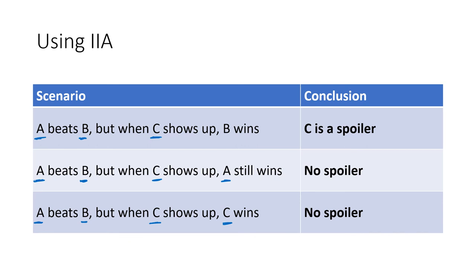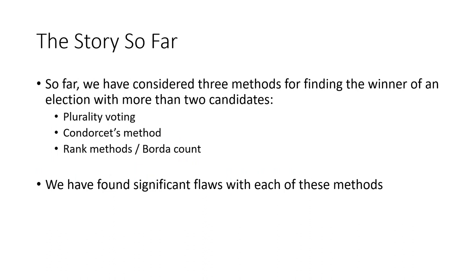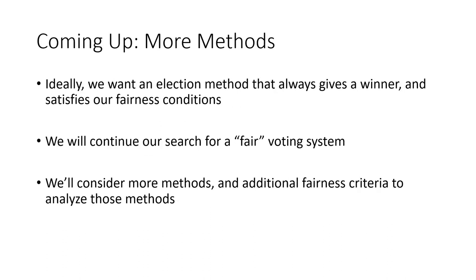So far we've considered several methods for finding the winner of an election with more than two candidates: plurality voting, which is very common in the United States; Condorcet's method; and in this section, rank methods and Borda count. We've found flaws with each of these methods. We're going to continue this process, look at more methods, and continue our search for a perfect or fair voting system — more methods and more fairness criteria to analyze. I'll see you then.